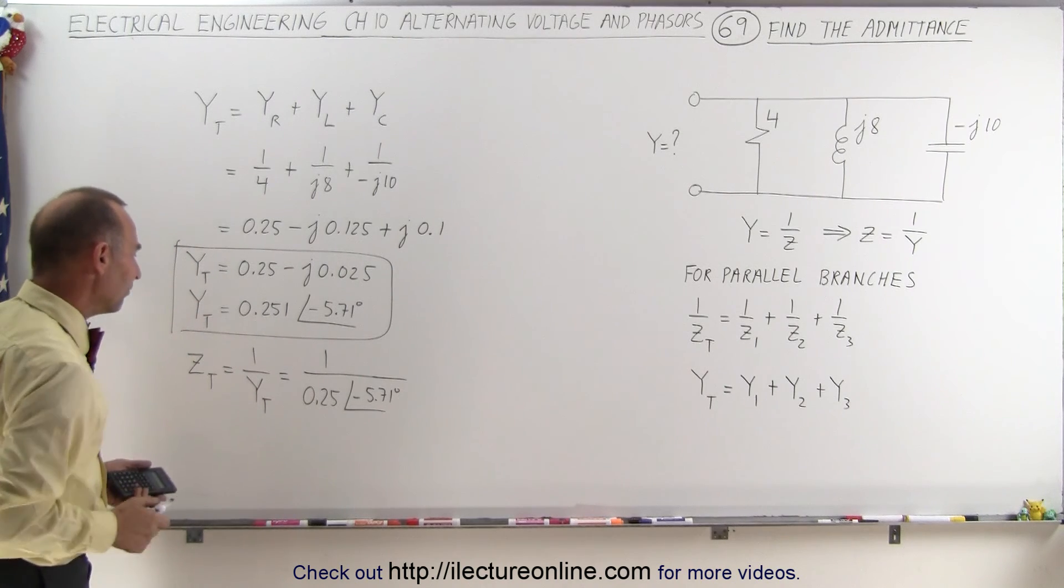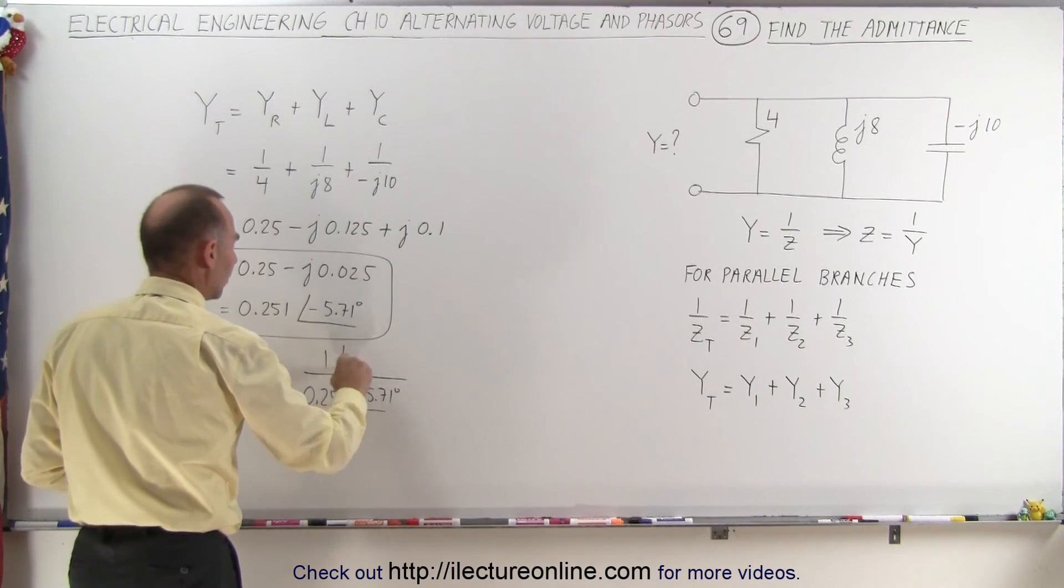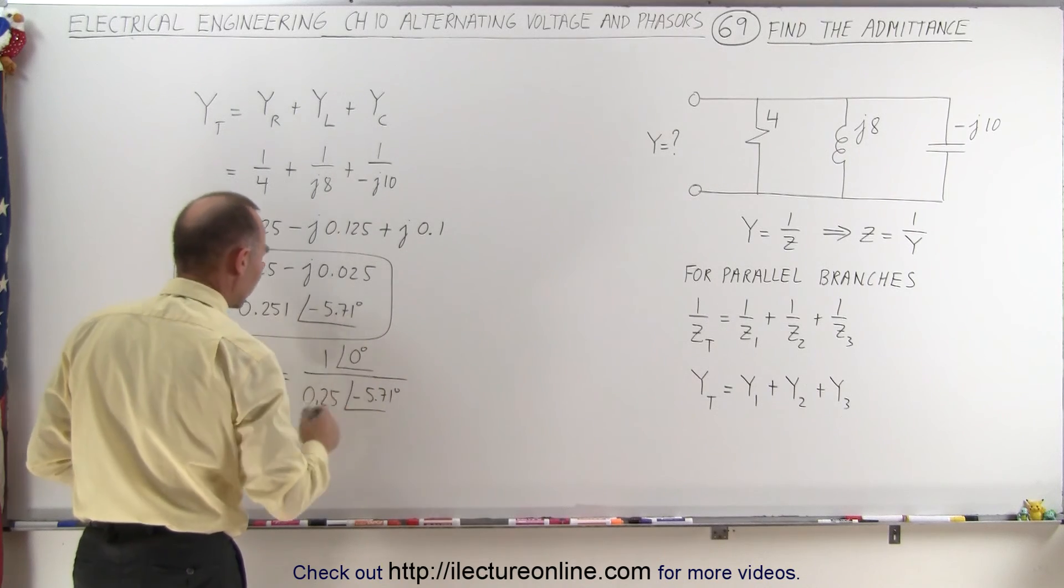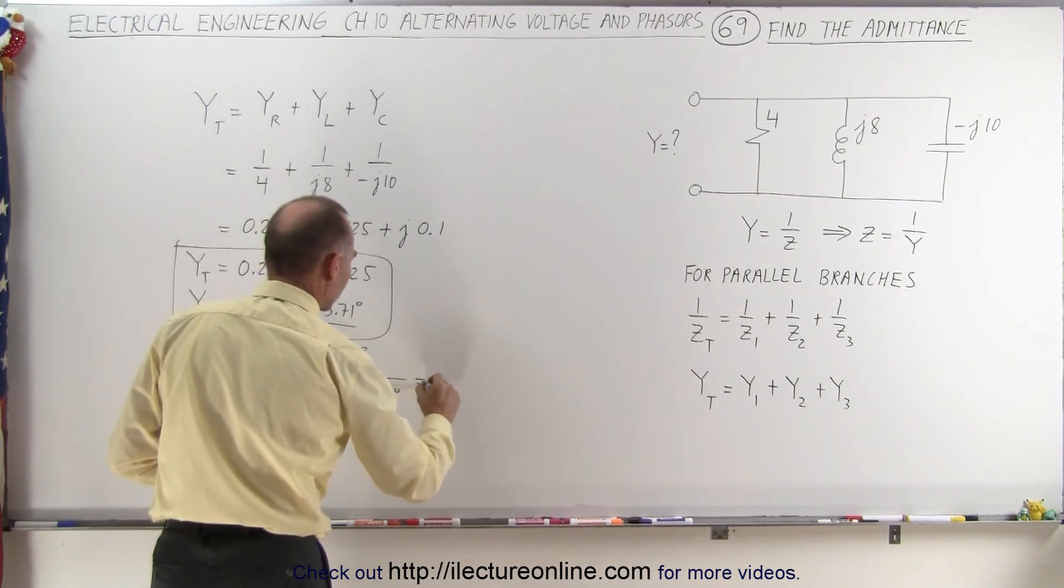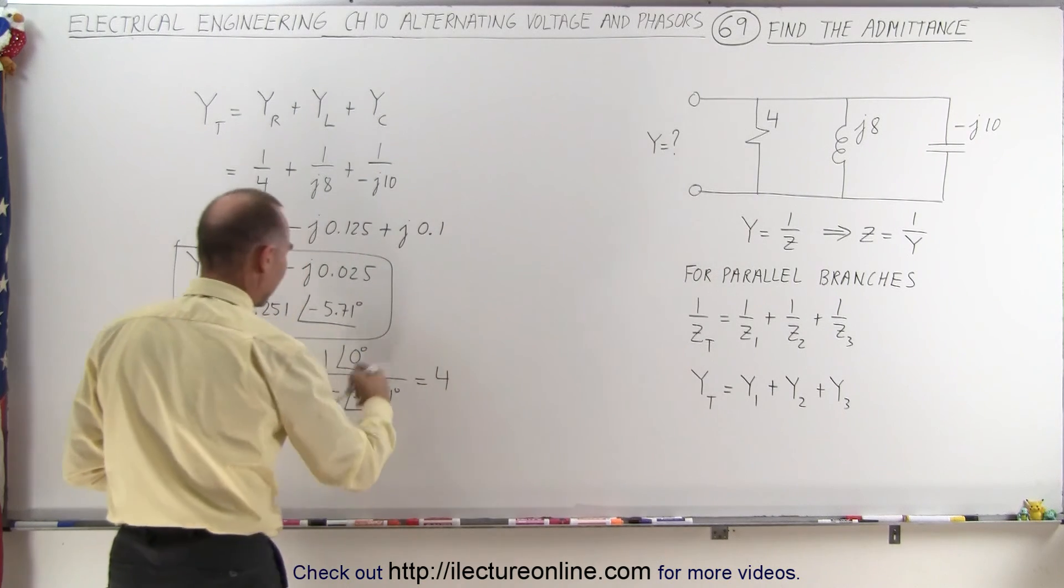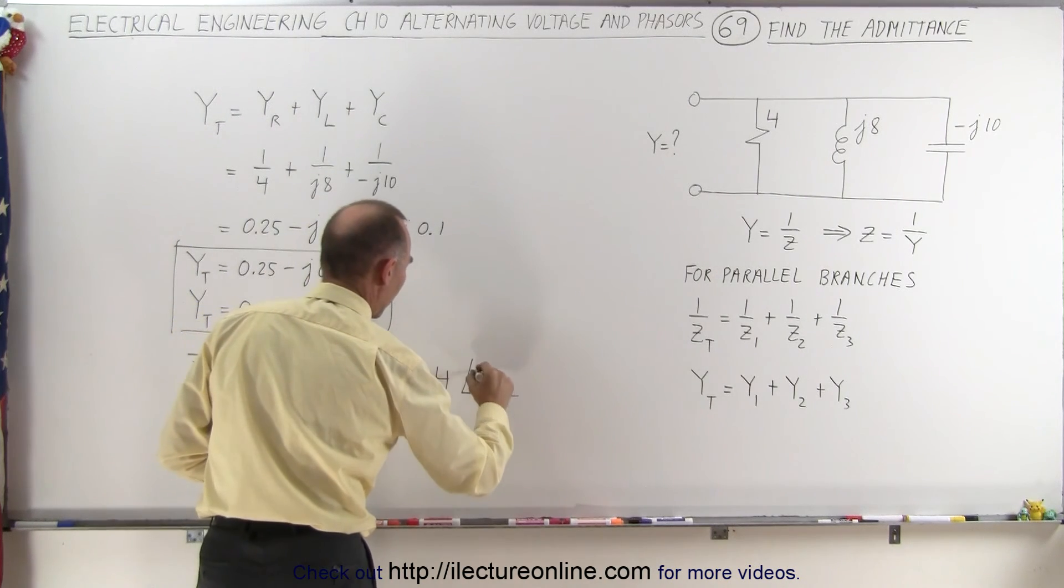So how do you take the inverse of that? Well, first of all, this can be written as 1 to the 0 angle, because that's simply a number. So 1 divided by 0.25, that's equal to 4. And then the angle becomes a positive 5.71 degree.